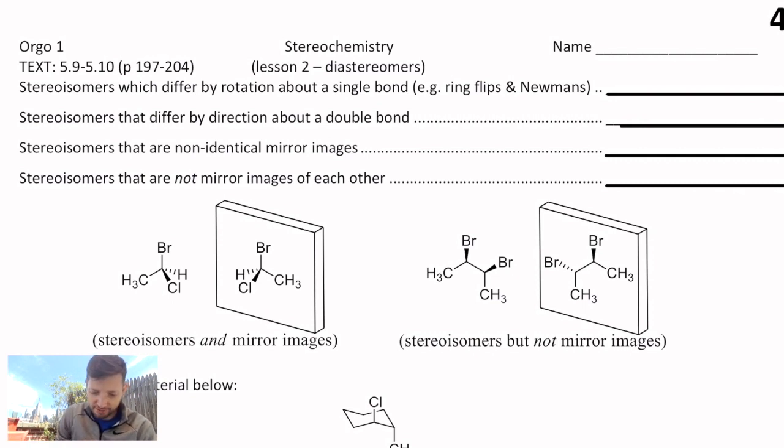First off, stereoisomers that differ by rotation about a single bond, this is actually from our previous unit, things like ring flips and Newman projections, those are conformational isomers. Technically they're not even really isomers, they're just different representations of the same compound, but we talked about how they exist differently in space.